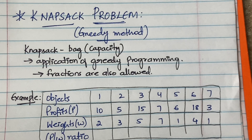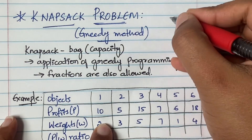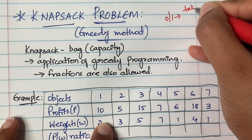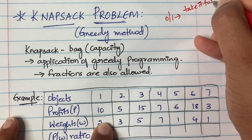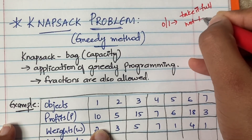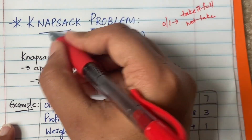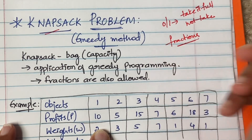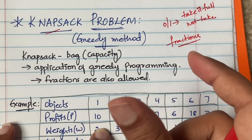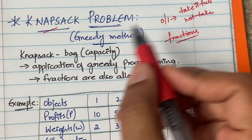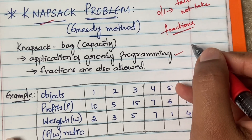A similar concept is used here, but this is just the knapsack problem — it is not the zero-one knapsack problem. In the zero-one knapsack problem, you can either take the entire object or not take it at all. But for this knapsack problem, the advantage is that fractional parts of an object are also allowed. It is one of the applications of greedy programming.